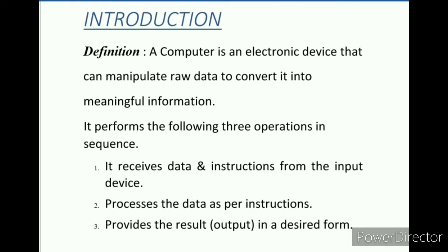A computer performs the following three operations in sequence. Number one: it receives data and instructions from the input device. Number two: it processes the data as per instructions — the CPU processes the data according to the given instructions.